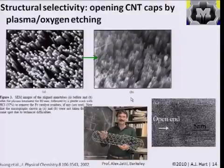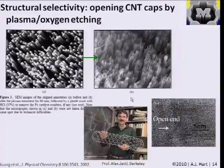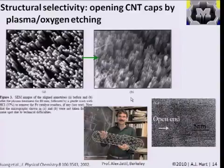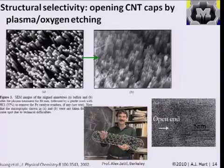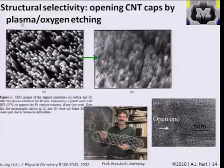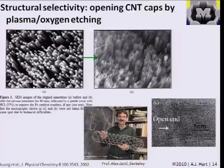Another type of etching is dry etching — chemistry that happens in the gas phase, often assisted by a plasma or voltage to ionize the etching gas and execute a chemical or physical removal of material. One example with nanotubes is taking a forest of vertically aligned nanotubes — fairly large diameter, multi-walled — and using an oxygen plasma to take just a little bit off the top of the nanotubes to open their caps. The oxygen plasma etches carbon by oxidation.